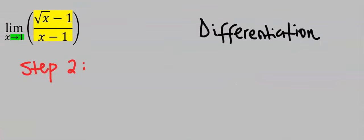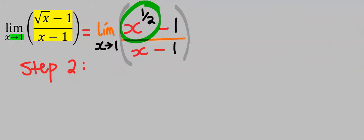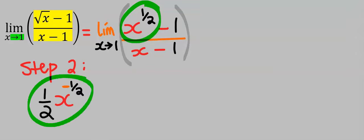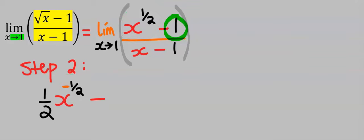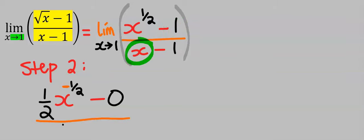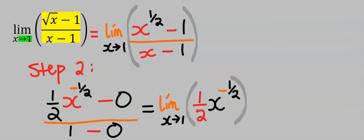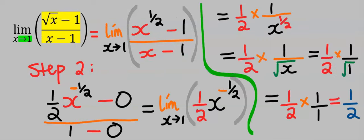Alternatively, in step number two we can use differentiation. We differentiate each variable separately. Differentiate x to the power of 1/2 and you get this. Next, differentiate 1 and you get 0. Next, differentiate x and you get 1. Taking the limit of the remaining function, solving and substituting carefully, your answer is 1 over 2 — the same answer as before.